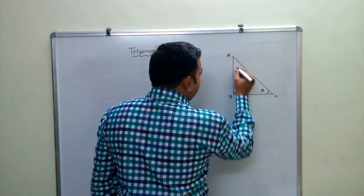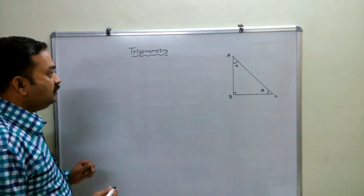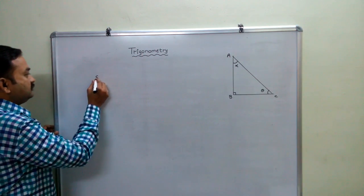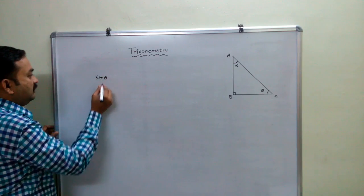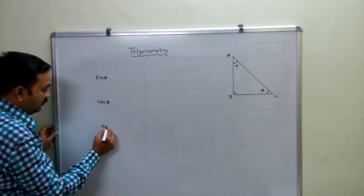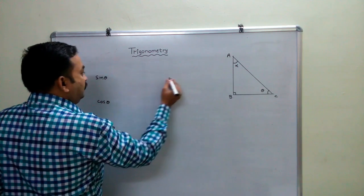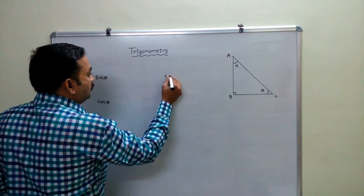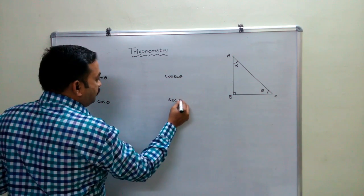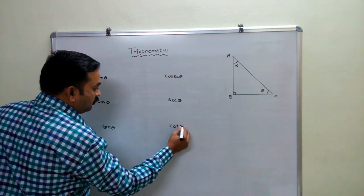And here, one more acute angle alpha. We have learnt six trigonometric ratios: sin theta, cos theta, tan theta, and their reciprocals cosec theta, sec theta, and cot theta.